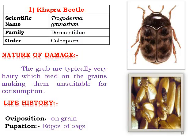The Khapra beetle, Trogoderma granarium, is a broad beetle. The grub is typically very hairy and feeds on grains, making them unacceptable for consumption. Egg position is on the grain, and pupation occurs on the edges of the grain layers.